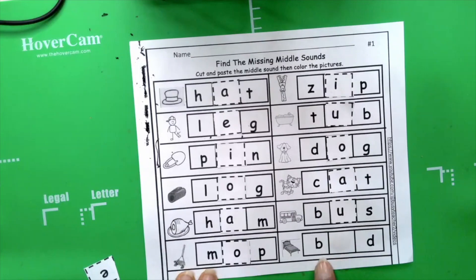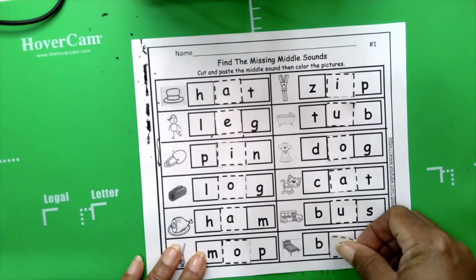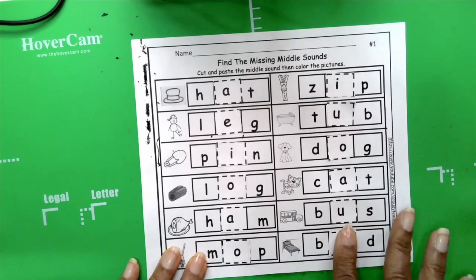And the last one is bed, b, e, d, bed, and there's only one letter left, E, and it fits perfectly, very good boys and girls, we did it, how about that.